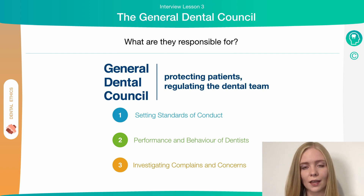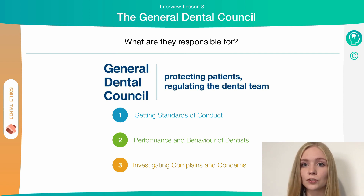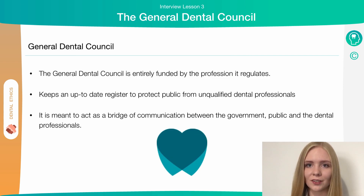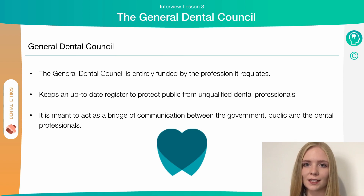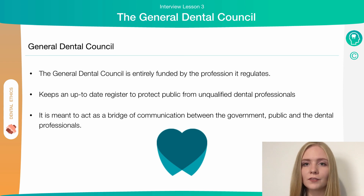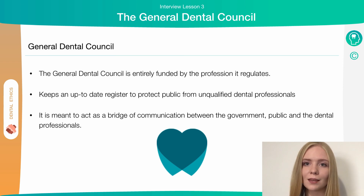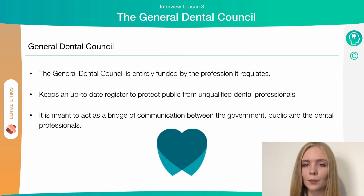If there's enough evidence to suggest that a dentist isn't practicing fairly, they could get struck off from the GDC register, meaning they can't practice in the UK. The General Dental Council is entirely funded by the profession. The GDC keeps an up-to-date register of dentists who are qualified and registered to practice dentistry in the country. If a dentist isn't on this register, it means they're practicing dentistry illegally, and therefore the register is there to protect the public against illegal practice.